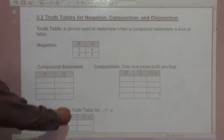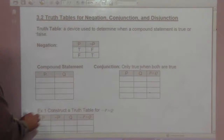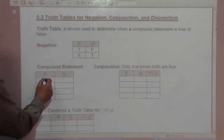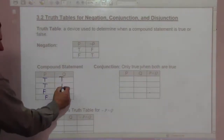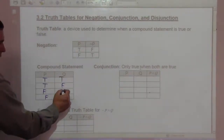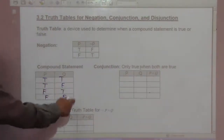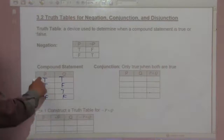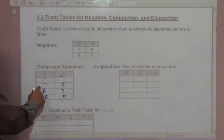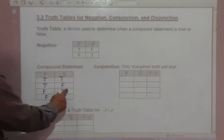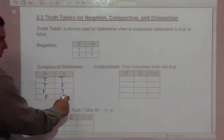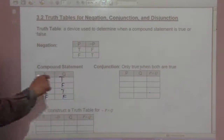In a compound statement with two statements, we use this setup: P is true, true, false, false. And Q would be true, false, true, false. This gives us all four cases: P true and Q true; P true, Q false; P false, Q true; and P false, Q false.